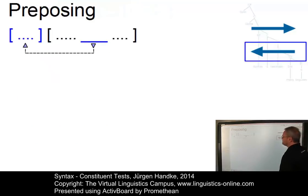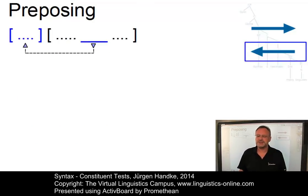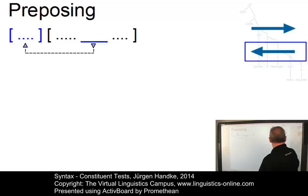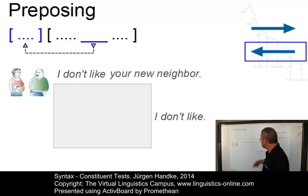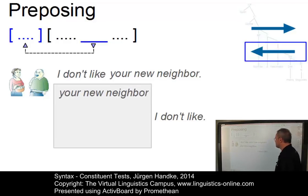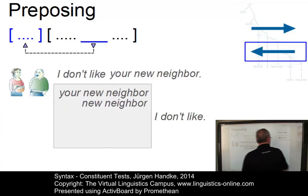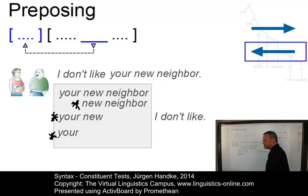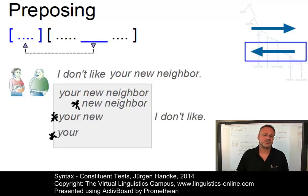Let's look at pre-posing first. Pre-posing means that under certain stylistic conditions, to achieve a particular stylistic effect, parts of a sentence may be moved to the front. However, only a whole constituent can be pre-posed in this way, not just part of it. Here is an example: 'I don't like your new neighbour.' Let's now pre-pose several items. For example, 'your new neighbour' — this clearly works: 'Your new neighbour I don't like.' If we pre-pose 'new neighbour,' the result clearly is ungrammatical. 'Your new' doesn't work and neither does just 'your.' So, in other words, since only 'your new neighbour' works, we have reasons to believe that it is a constituent — it is only the entire constituent 'your new neighbour' that can be pre-posed and not just parts of it.